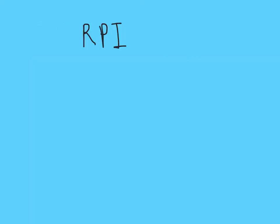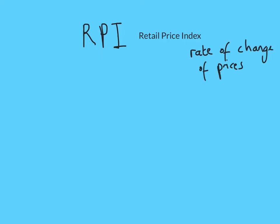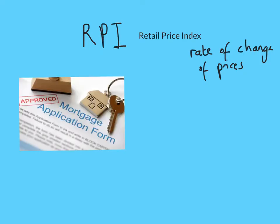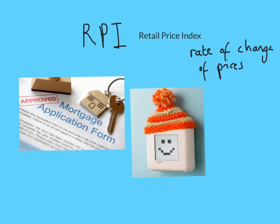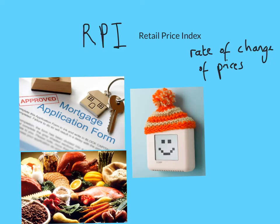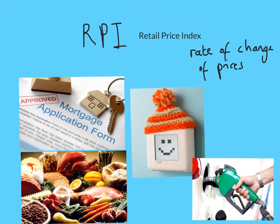We will start off with the RPI — the Retail Price Index. It's about a rate of change, so it's about how much things change, and it's talking about prices of everyday life things. The sorts of things we're looking at the change in price of are mortgage payments, heating, food, and petrol.